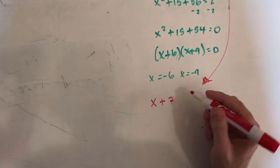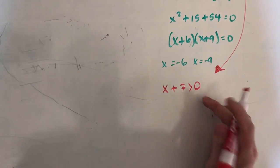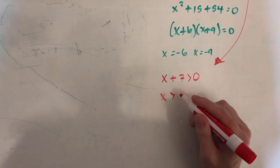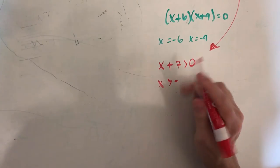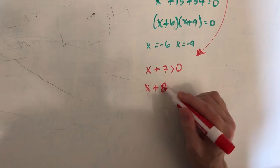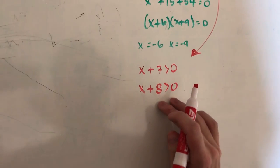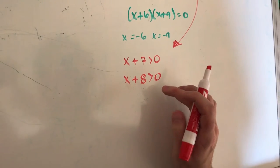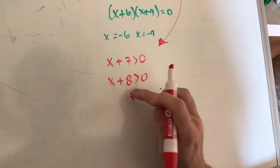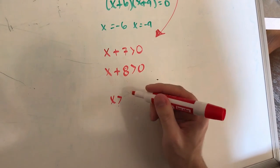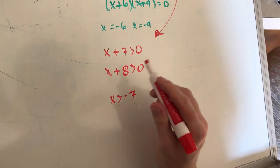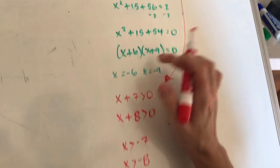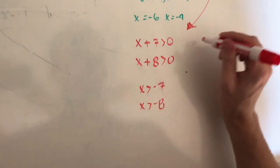We're going to make the greater-than sign. We're going to do x plus 7 greater than 0, and also x plus 8 greater than 0. When we get here, we need to solve for x. So we get x greater than negative 7, and x greater than negative 8. Then we're going to write a little number line. We have negative 8 here and negative 7 here.